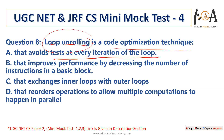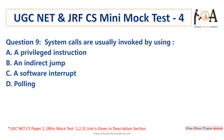Loop unrolling is a code optimization technique used to avoid testing at every iteration of the loop. It helps reduce the checking of code at every step. Performance is not negatively affected; rather, it improves efficiency by reducing repetitive condition checks. Option A is the correct answer.